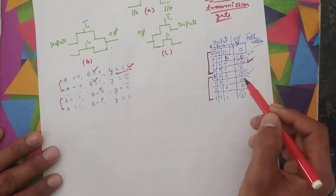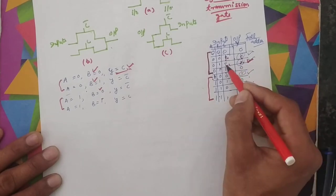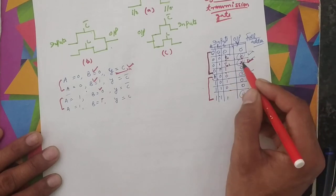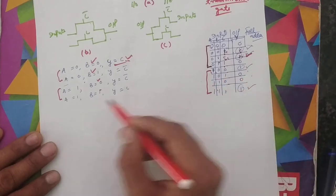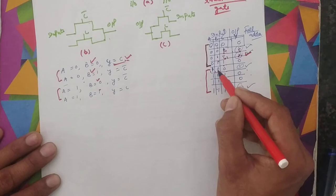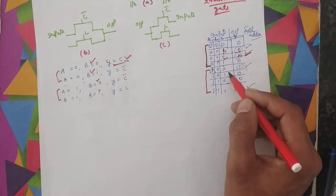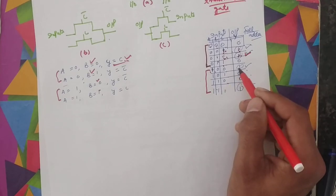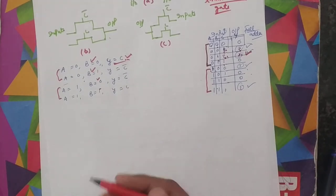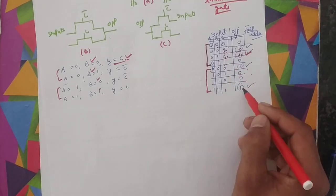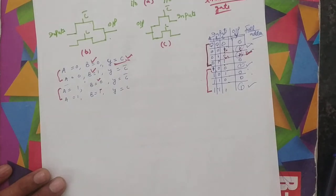For the second condition, when Y is equal to 1 again but the value of C is 0, then Y equals C complement — meaning when Y is 1 and C is 0, Y equals C complement. When A equals 1 and B equals 0, Y is 1 and C is 0, so again Y equals C complement. Finally, when A equals 1 and B equals 1, C is also 1, so Y equals C. Once you make this equation, you will be able to make the circuit.